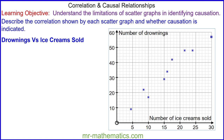Hello and welcome to our lesson on correlation and causal relationships. In this example we see a positive correlation between the number of drownings and the number of ice creams sold. This means as the number of ice creams sold increases, so does the number of drownings.